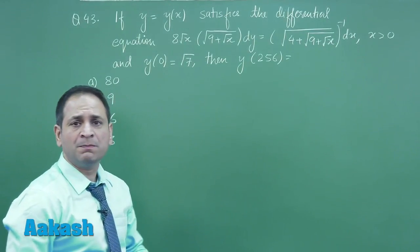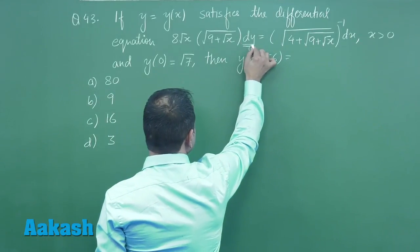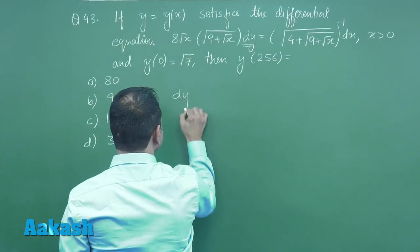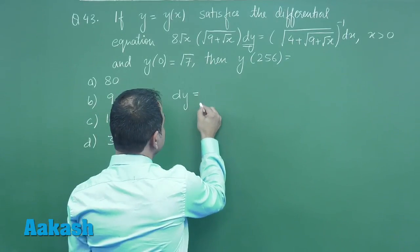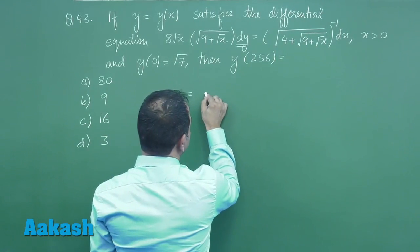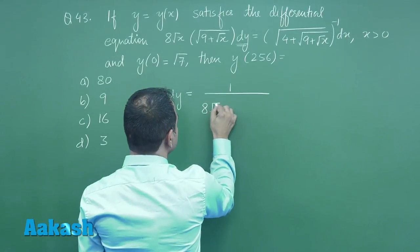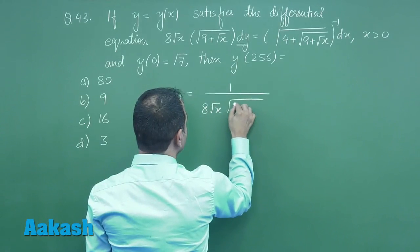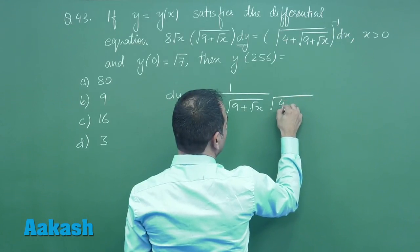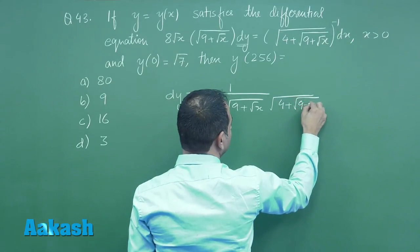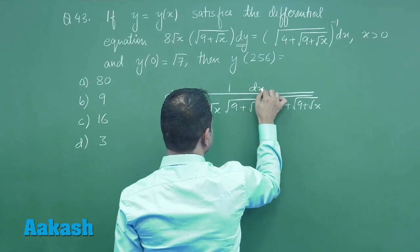Now it seems to be a complicated one but you can clearly see again rearranging the term, taking dy on the left hand side and all rest terms on the right hand side, here we have dy = 1/(8√x√(9+√x)) × (4+√(9+√x))dx.